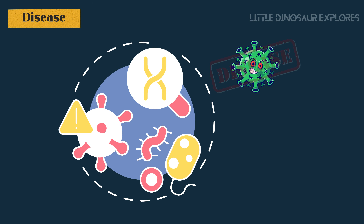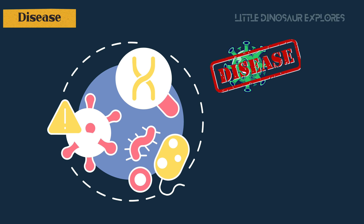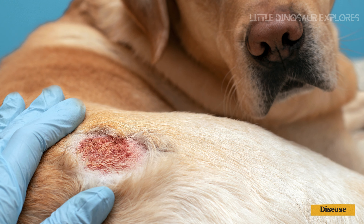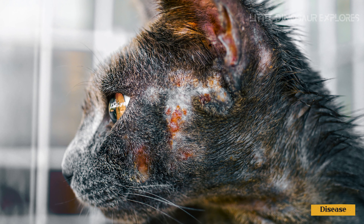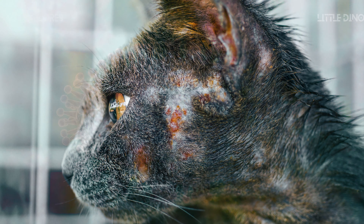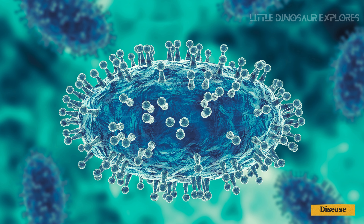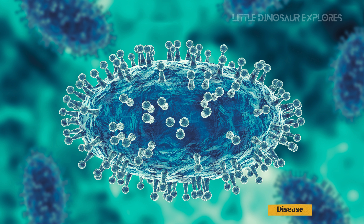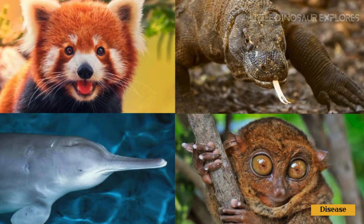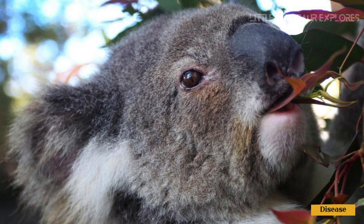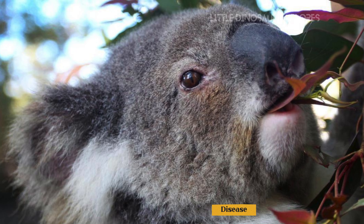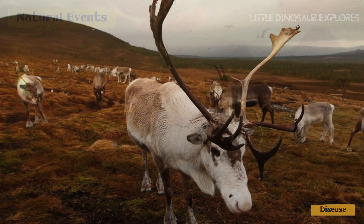6. Disease. Outbreaks of infectious diseases can have significant impacts on populations and contribute to species extinctions, particularly in situations where diseases are introduced to native populations with no immunity. Disease outbreaks can be exacerbated by factors such as habitat loss, climate change, and human activities that bring species into closer contact with one another.